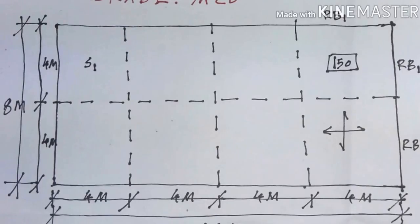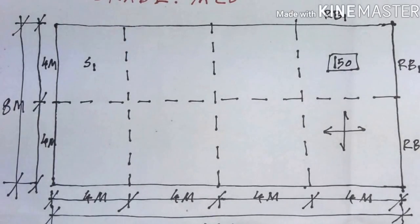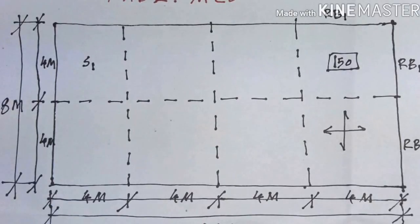The slab size in plan is 8 meters by 16 meters — I am also attaching that plan for your reference. It is divided into four ways, four meters each. The slab thickness is 150 mm.